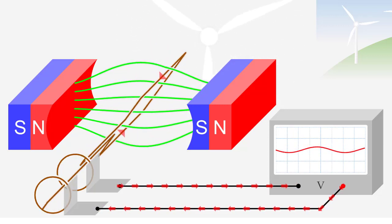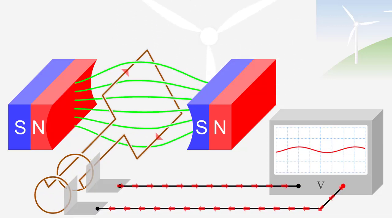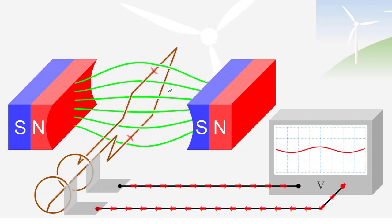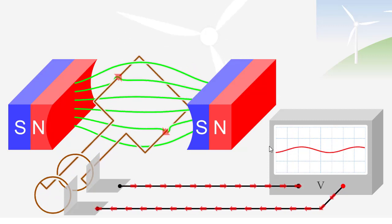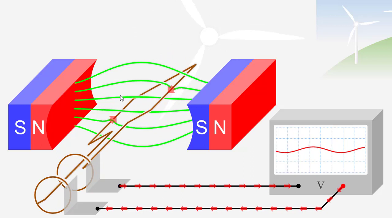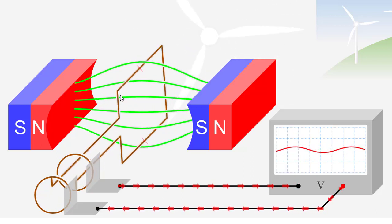In this video we will see generation of alternating voltage. Here we can see generation of a sine wave using the simplest type of alternator. Now, an alternator is used for generation of alternating voltage.